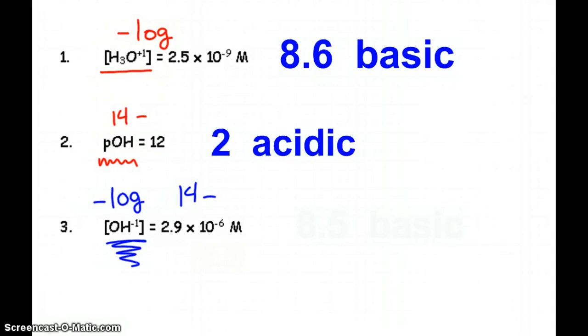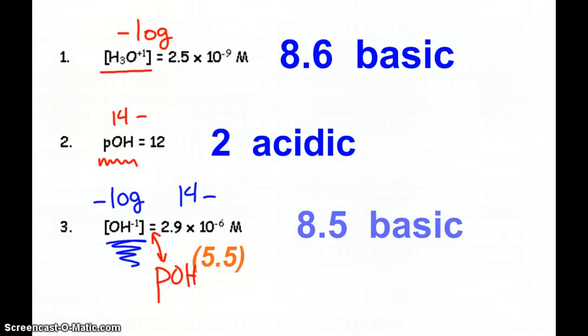Now, when I give you hydroxide, and you take the negative log of that, you get pOH, because hydroxide and pOH go together. So the negative log of that is 5.5. So I have to subtract that from 14 to get 8.5, and that's a basic solution. So again, those three ways, that's the important stuff as far as figuring out what type of solution you have.